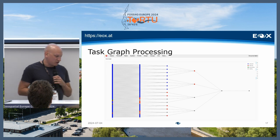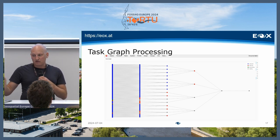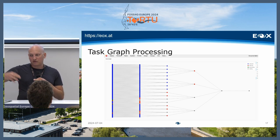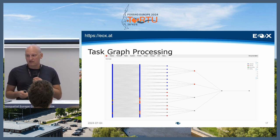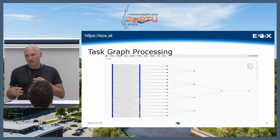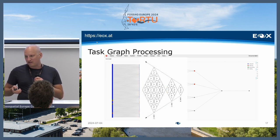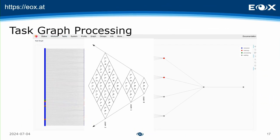A nice feature of Dask is task graphs — your tasks can depend on each other, which helps when processing many things. Dask efficiently decides which tasks should be done when and where. Looking at a Dask graph, it should remind you of something — it's a tile pyramid. So if you're building a large tile pyramid with overviews, you can use Dask graphs — it comes in really handy.